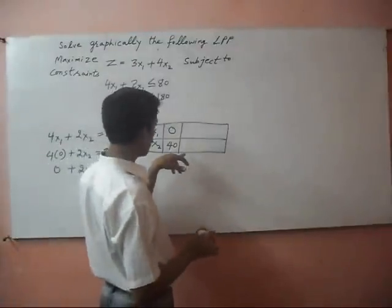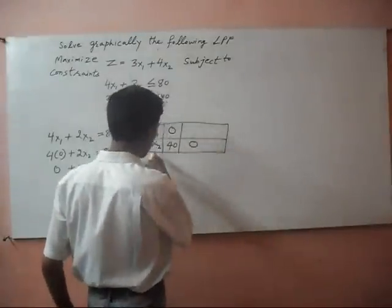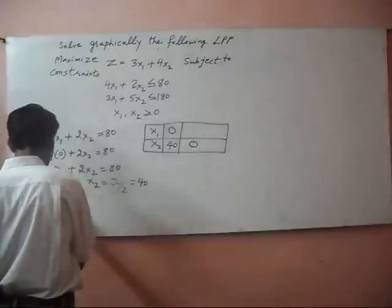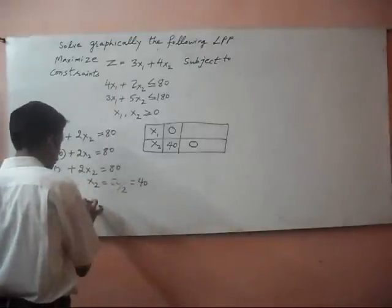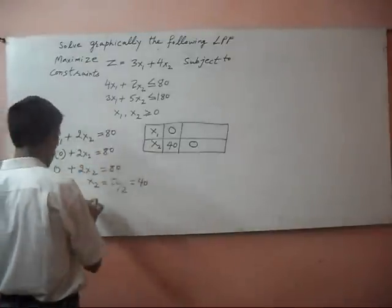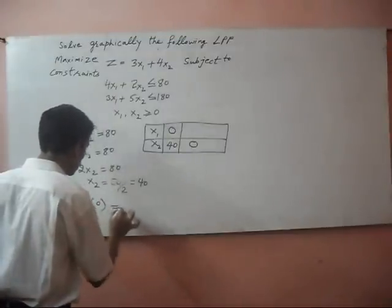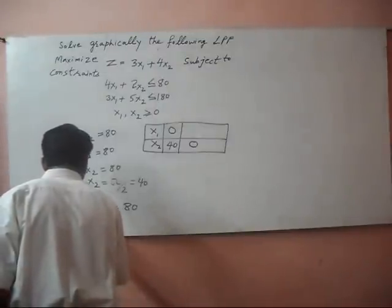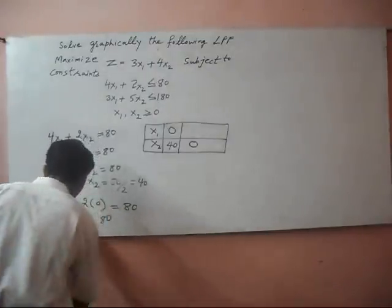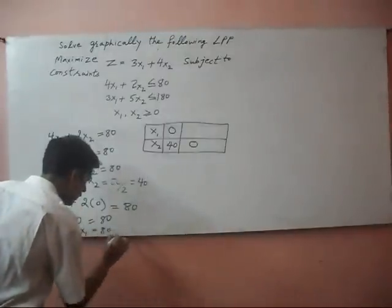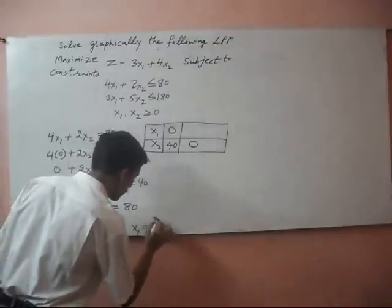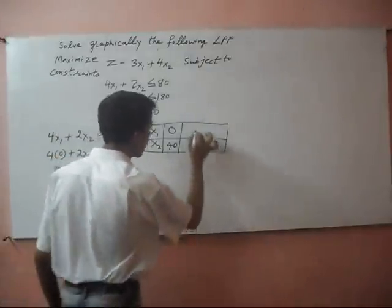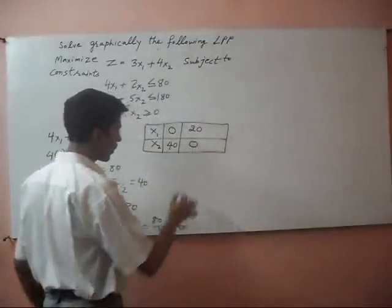Now we put x2 = 0 and calculate the value of x1. With x2 = 0: 4x1 + 0 = 80, so 4x1 = 80, and x1 = 80 ÷ 4 = 20. So we write 20 in the table.